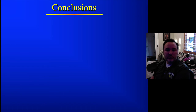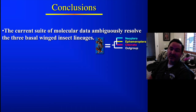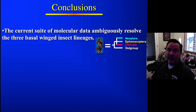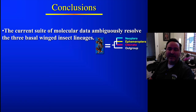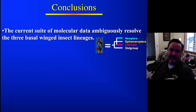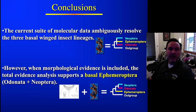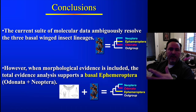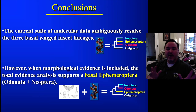My conclusions: first, the current suite of molecular data — meaning those two or three genes as of 2003 when this was published — ambiguously resolve the three basal winged insect lineages. As soon as we included the morphology, however, there was quite good support for basal Ephemeroptera. Those are my main conclusions, and you can see I didn't do anything grand here. That's where you can stop — just have conclusions like that. That's fine.